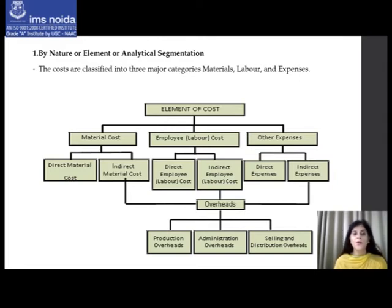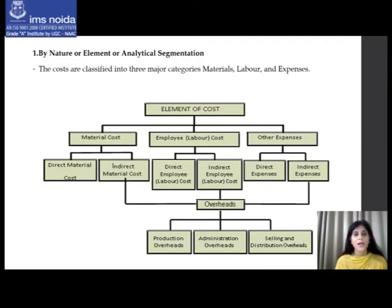If we combine all the indirect portions of the three elements — indirect material, indirect labor, and indirect expenses — we get overheads. Overheads are all those expenses which are non-direct in nature and cannot be directly allocated to a particular product. Overhead expenses can be categorized into factory or production overheads, office or administration overheads, and selling and distribution overheads.